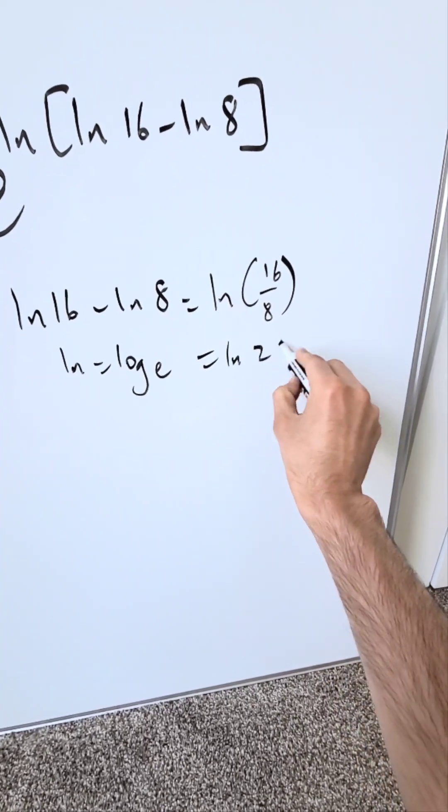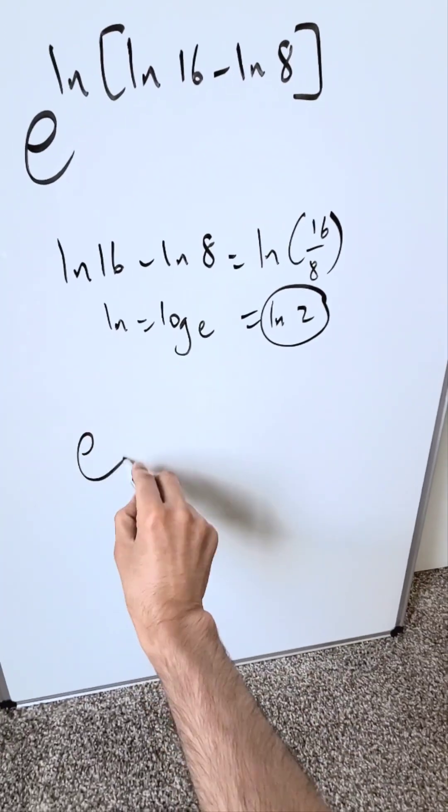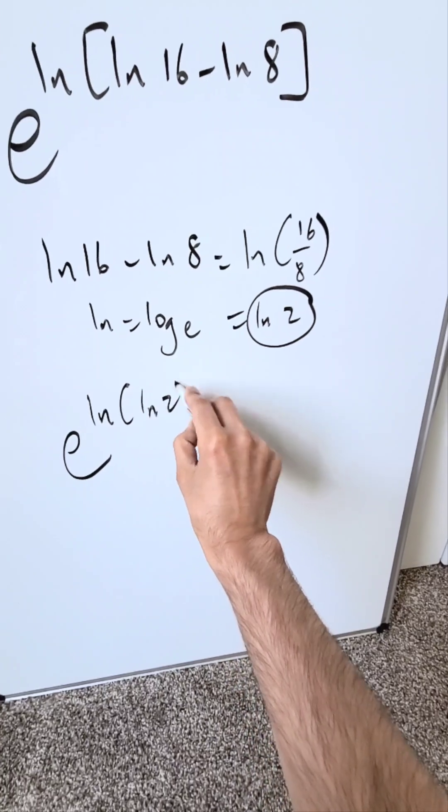I am really looking at natural log of 2. Now, suddenly it becomes e exponent natural log of natural log 2.